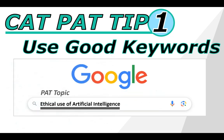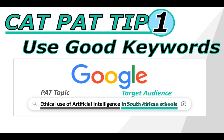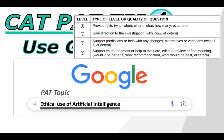Another keyword you can use is to also indicate your target audience. For example, if you are searching for the ethical use of artificial intelligence, but only in South African schools, you can get more specific data that can be more useful for your PAT. Level one and two questions are quite easy because those are just factual information or why things happen, but level three and four are the questions that are going to be difficult to find. By using good keywords, we are more likely to find information that relates to level three and four.